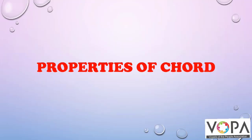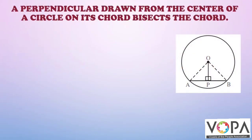The next topic we are going to learn is properties of chord. A perpendicular drawn from the center of a circle on its chord bisects the chord. What do you mean by bisect? The word bisect means divides equally into two parts.